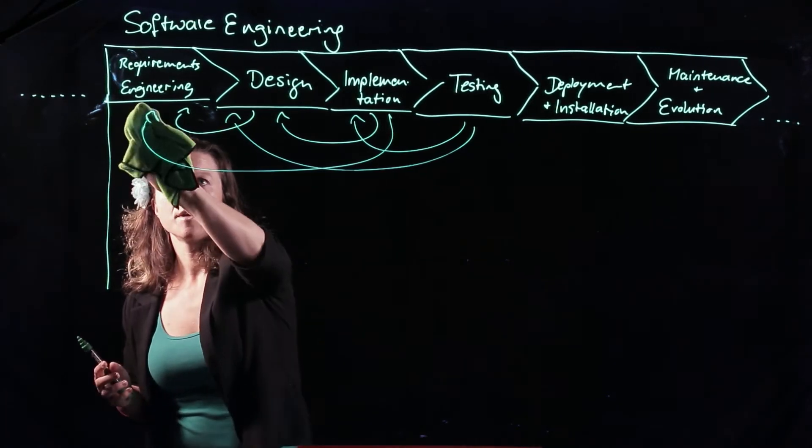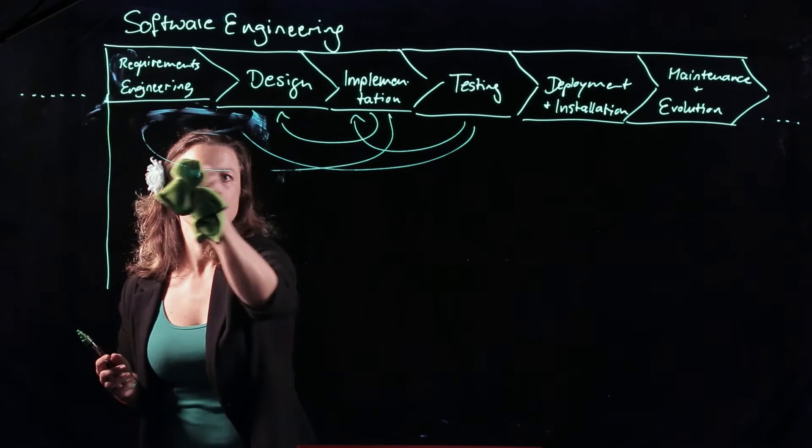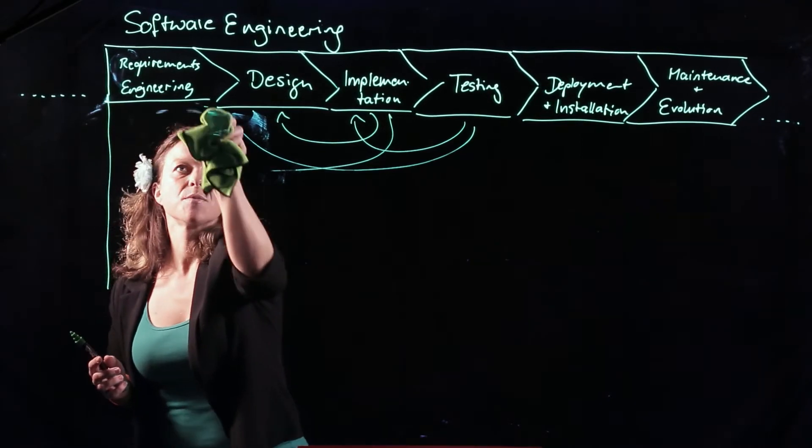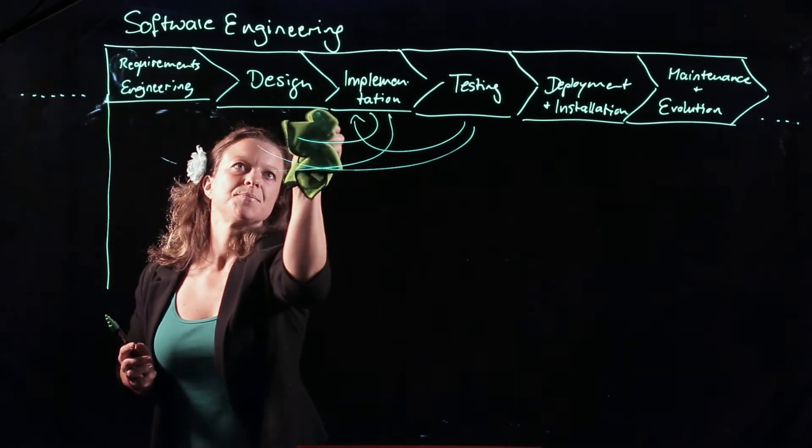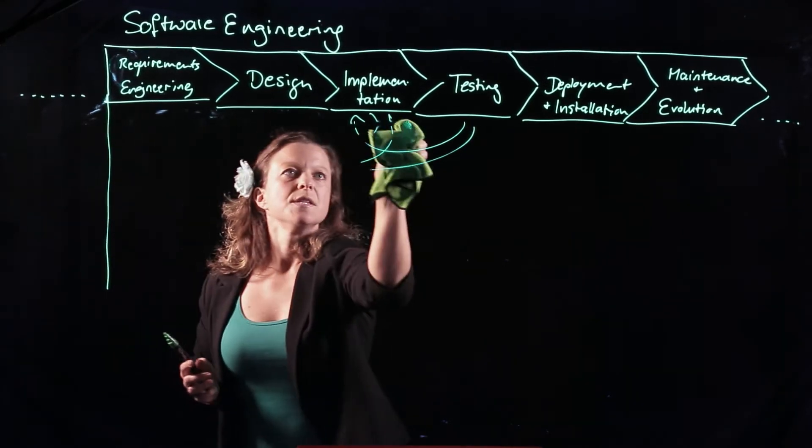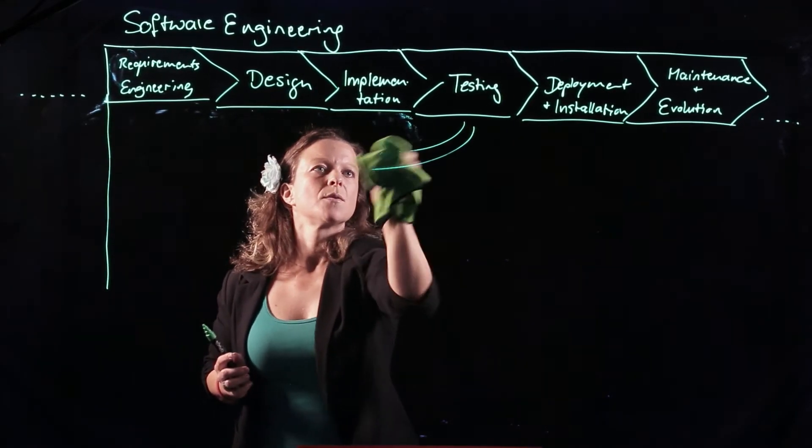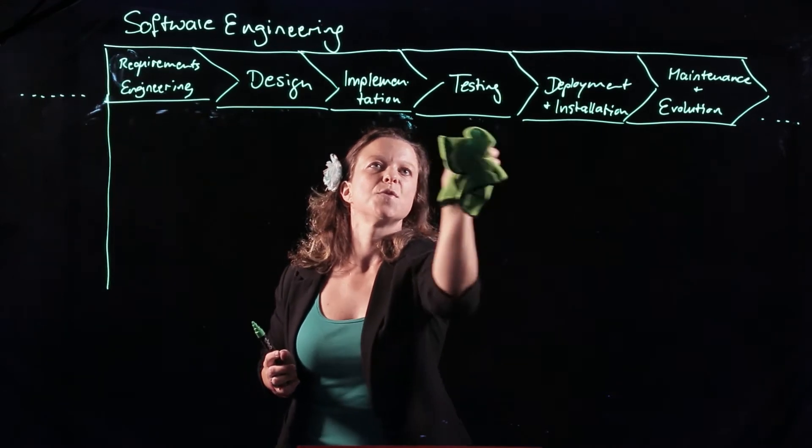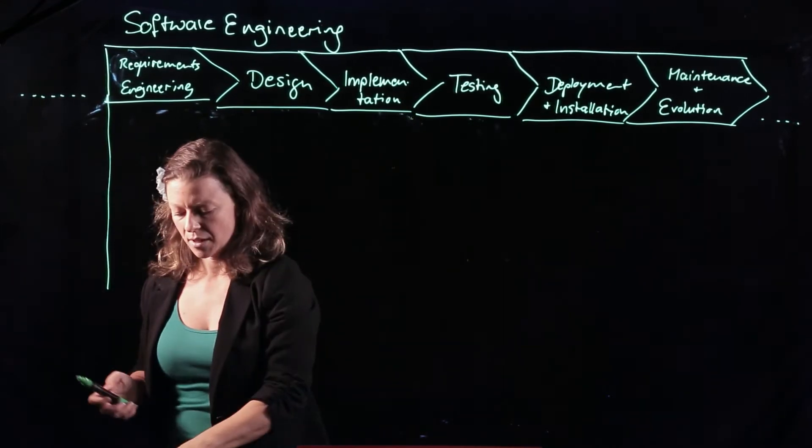Now, if we take away these feedback loops, now you know that they are supposed to be there. So we'll just abstract from them. We're instead going to look in detail into what requirements engineering is, what the phases of that one are. Again, a little simplified.